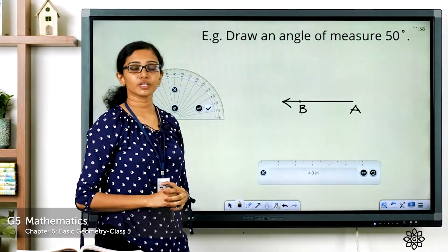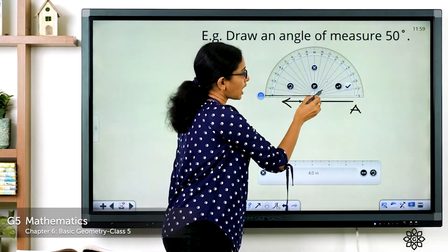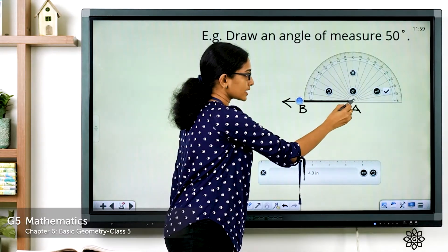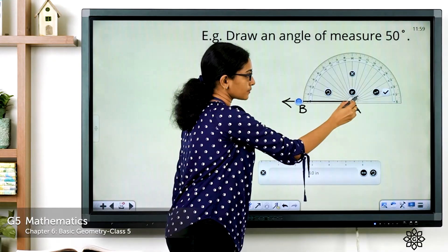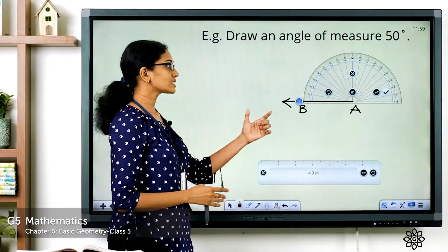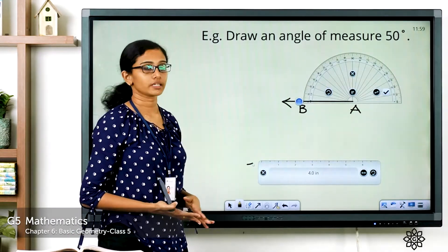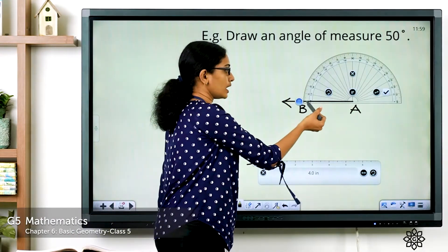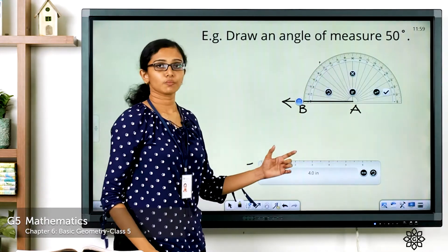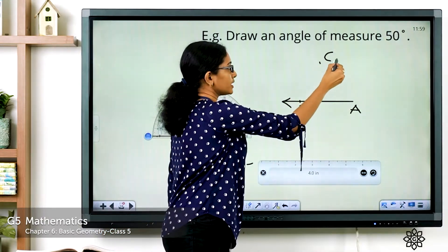We have to draw an angle measuring 50 degrees using the protractor. Place the protractor on the lower arm such that the baseline coincides with the lower arm and the vertex coincides with the center of the protractor. Since the lower arm is pointed towards the left, we are going to use the outer scale. Start counting from the left: 0 degrees, 10, 20, 30, 40, 50. Mark a point corresponding to the 50-degree mark. Set aside the protractor and name the point C.